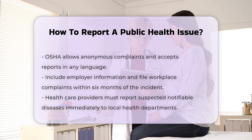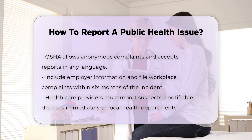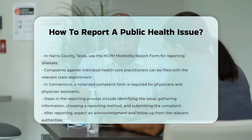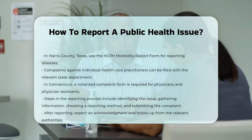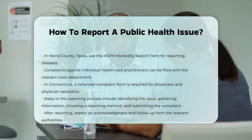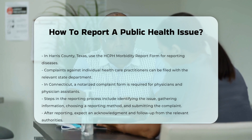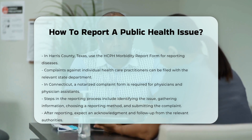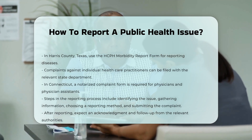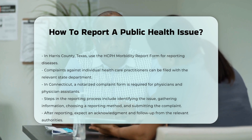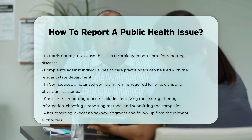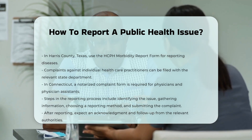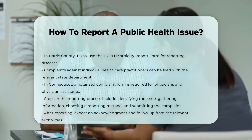Steps in the reporting process. When reporting a public health issue, it is important to provide as much detail as possible. Here are some general steps. Identify the issue: clearly describe the problem or concern. Gather information: include names, dates, times, and locations related to the incident.